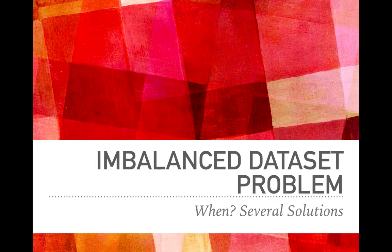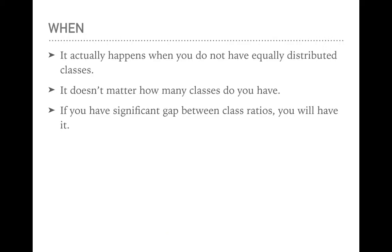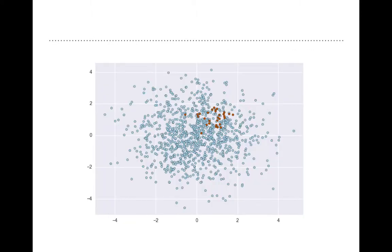When the imbalanced dataset problem happens, you can understand it from its name. It occurs when you do not have equally distributed classes. It means that one class has 100 samples and another class has 1000 samples. It doesn't matter how many classes you have — if you have a significant gap between class ratios or between classes' sample numbers, you will have this problem. This is the case of the imbalanced dataset problem.